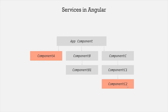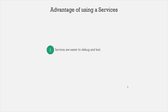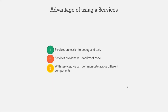So I hope with these three examples, what is a service in Angular and where do we use it is clear. Let's quickly see some of the advantages of using a service. First, services are easier to debug and test. Second, services provide reusability of code — we saw this with the onEnroll method and the products array examples. Third, with services we can communicate across different components which do not have a parent-child relationship. In the next lecture, we will create our very first service in Angular, and there you will learn how a service provides reusability of the code.